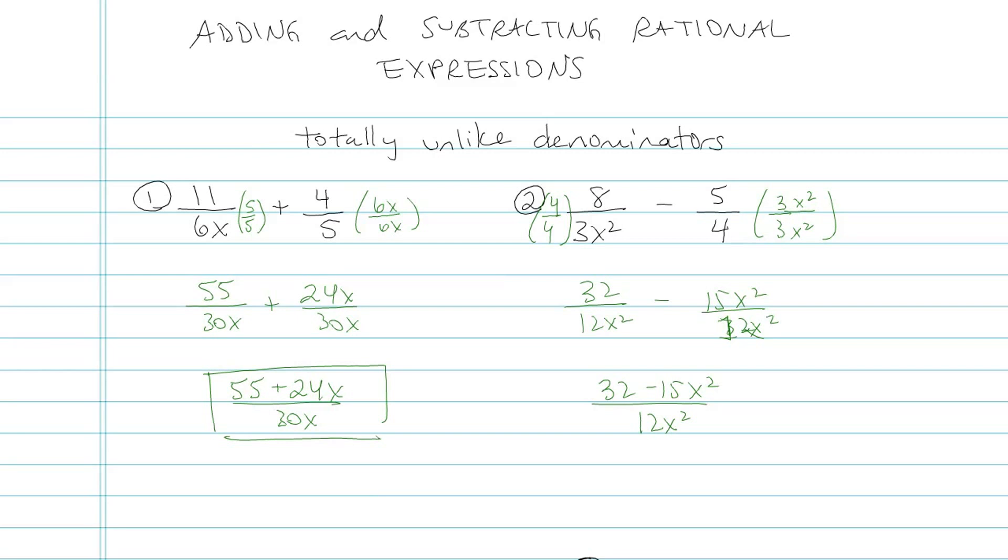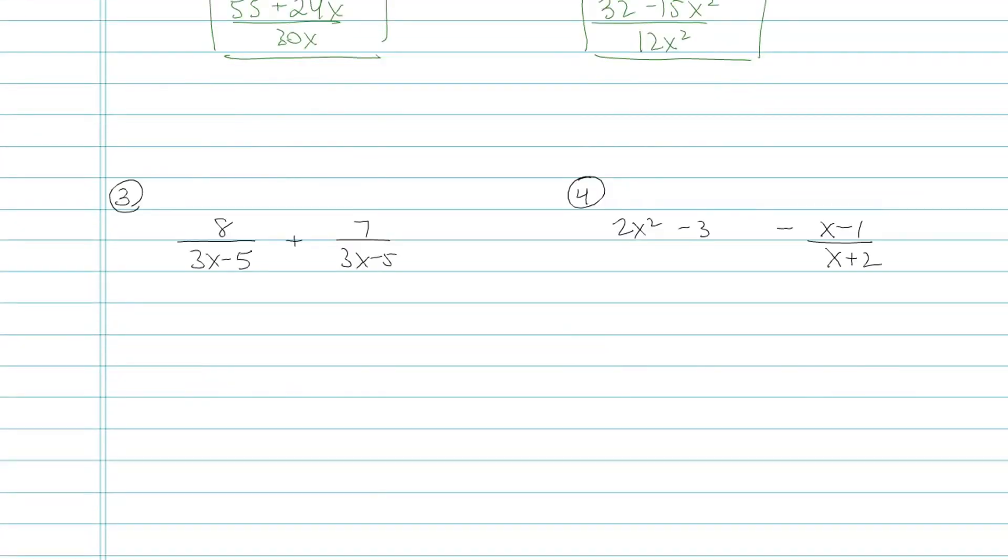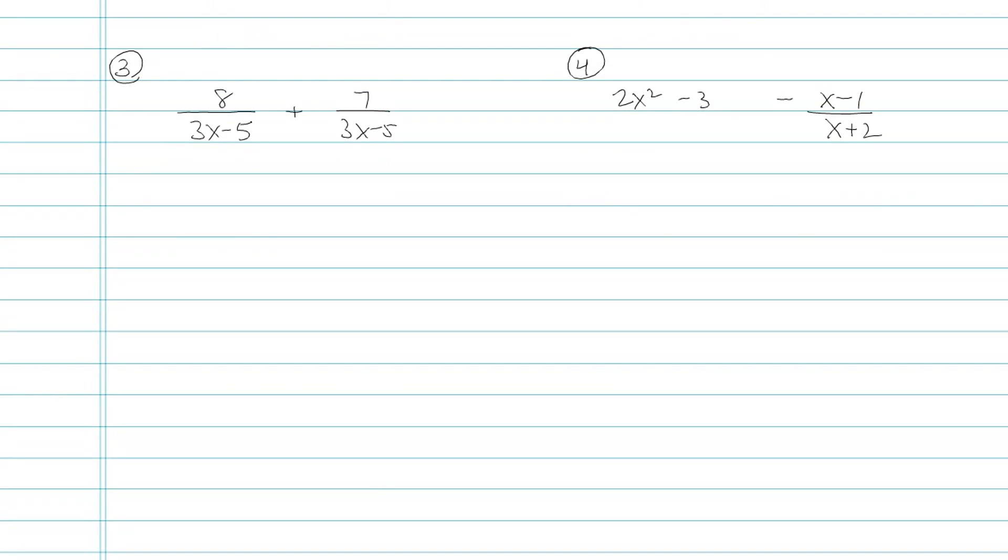So I would look on top and see if there's a greatest common factor between 32 and 15, and there is not. So that's my final answer. Now we're going to get a little more tricky because we have, oh gosh, I wrote that problem wrong. Hang on. I was going to say, that doesn't look tricky at all.